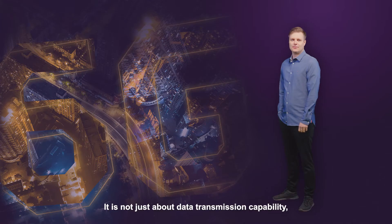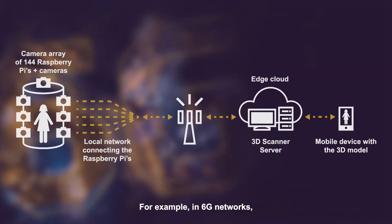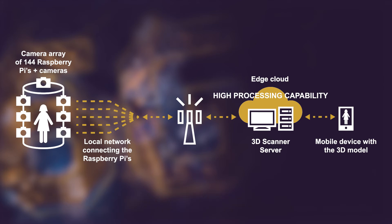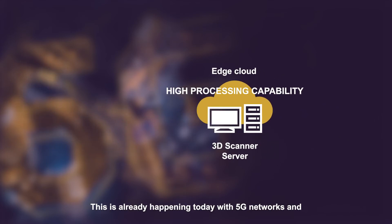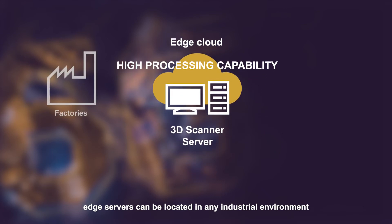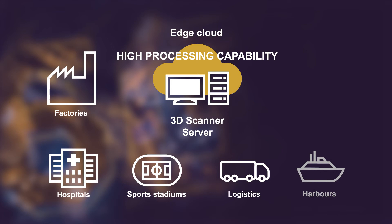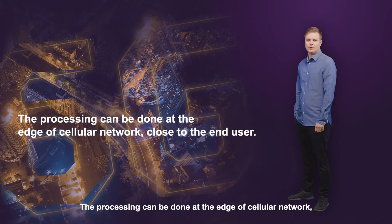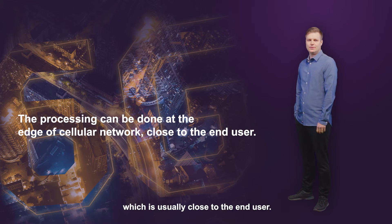It is not just about data transmission capability — it is also about data processing capabilities. For example, in 6G networks, processing capability is most likely to be located right next to the base station in so-called edge servers. This is already happening today with 5G networks and edge servers. Edge servers can be located in any industrial environment, for example factories or hospitals. The processing can be done at the edge of the cellular network, which is usually close to the end user.